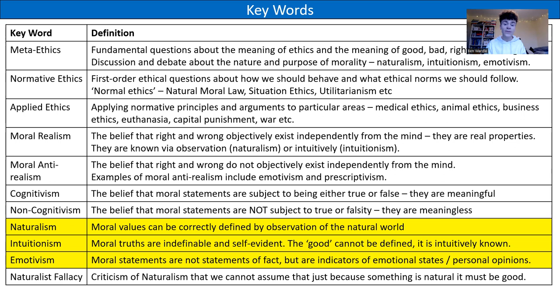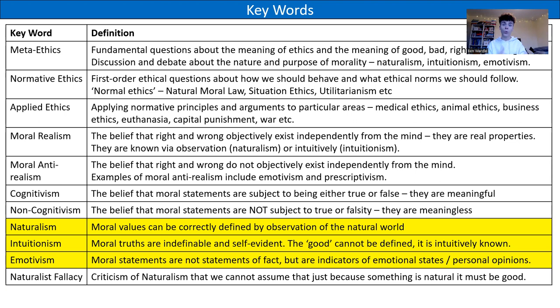Moral realism is the belief that right and wrong objectively exist independently from the mind — they are out there for us to discover. So they are real properties that can be discovered via observation, which is what ethical naturalism is about, or intuitively, which is what intuitionism is about. In contrast, moral anti-realism is the belief that right and wrong do not actually objectively exist independently from the mind — they are not real things. Examples of this would be emotivism and prescriptivism.